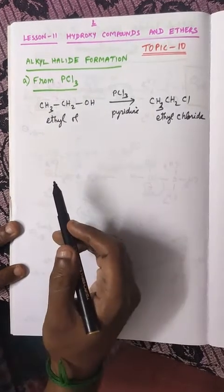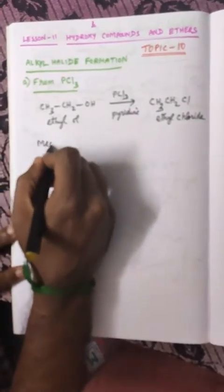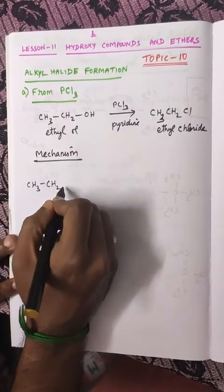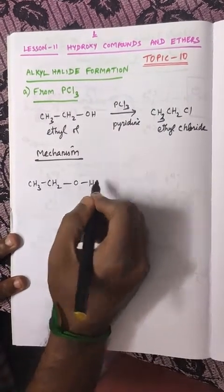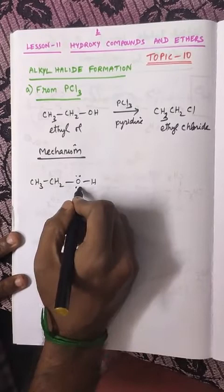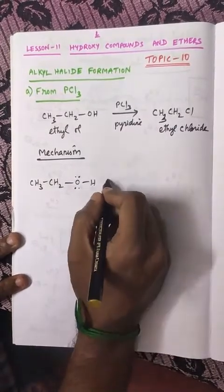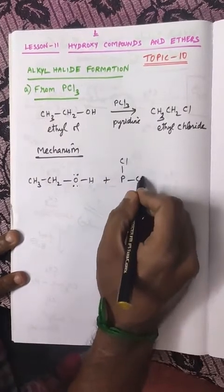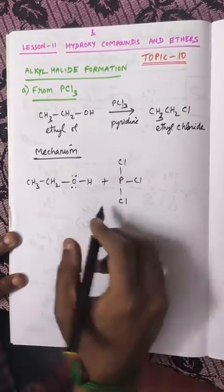I am going to explain the same with the mechanism. Mechanism for the above reaction. Let us take ethyl alcohol, CH3-CH2-OH. As usual, the oxygen contains two lone pairs of electrons. It is going to react with PCL3.